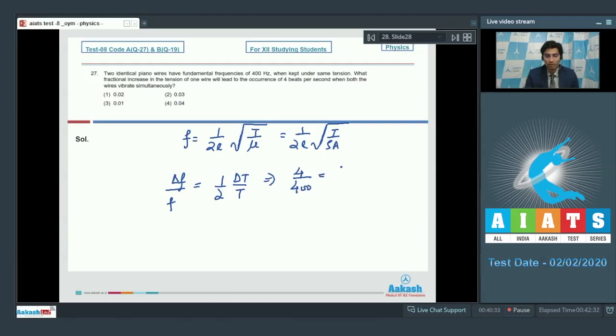So, 4 by 400 should be equal to 1 by 2 into delta t by t which means delta t by t should be equal to 0.02. Therefore, a fractional increase of 0.02 is required which makes option number 1 as the correct answer. Let us proceed to question number 28.